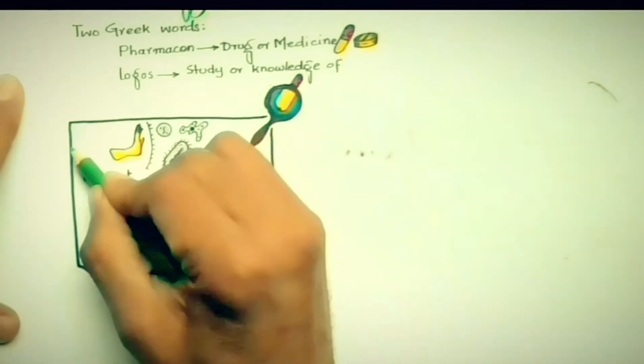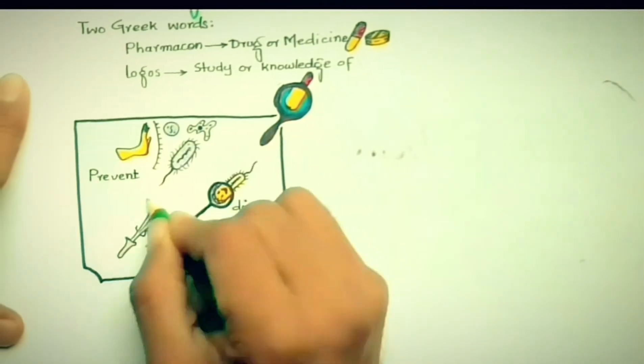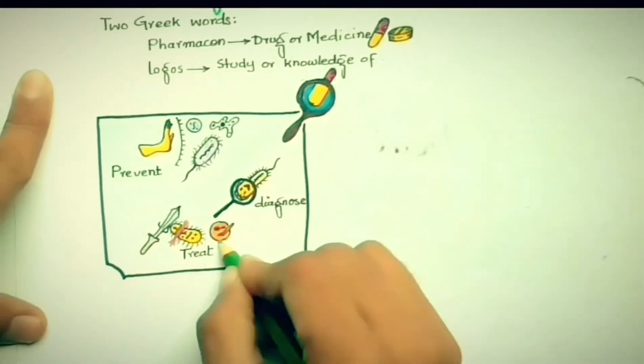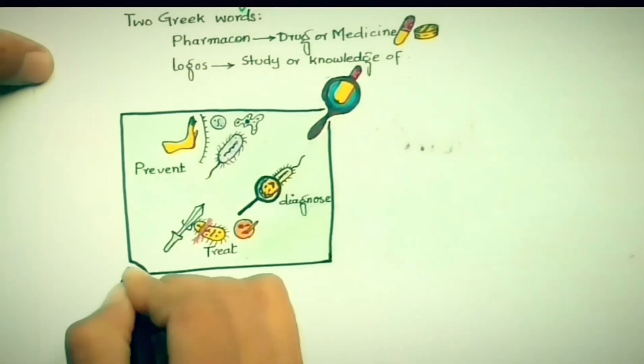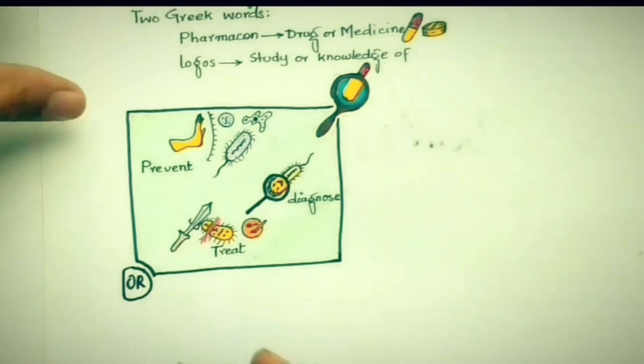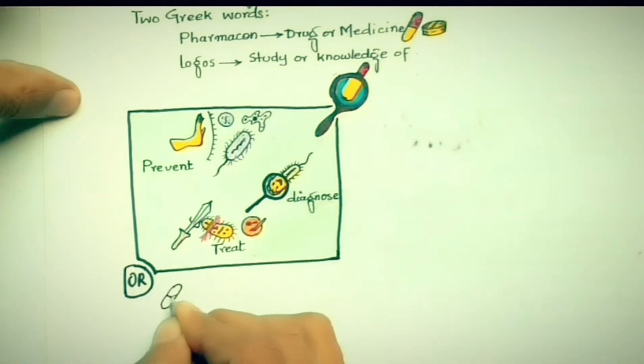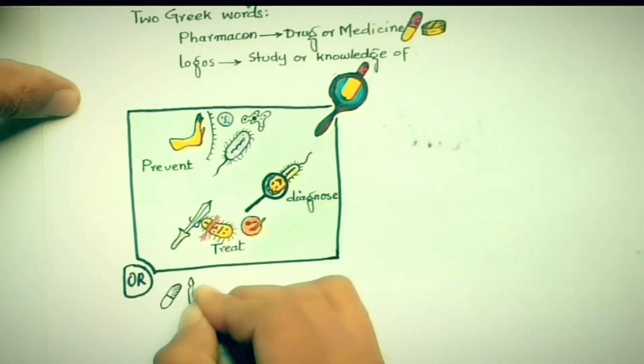So in other words, we can define pharmacology as the science of drugs including their origin, composition, pharmacokinetics, therapeutic use, and toxicology.